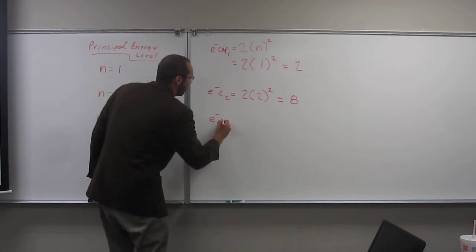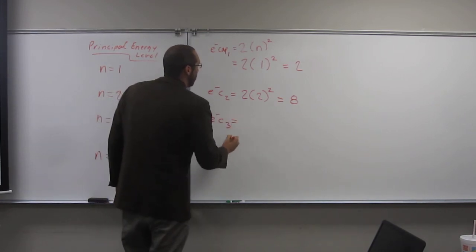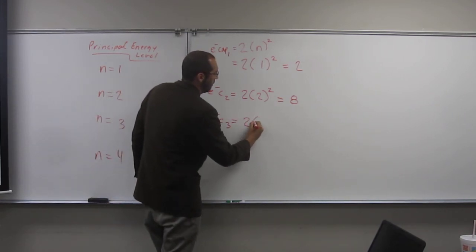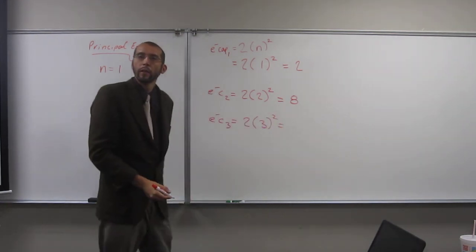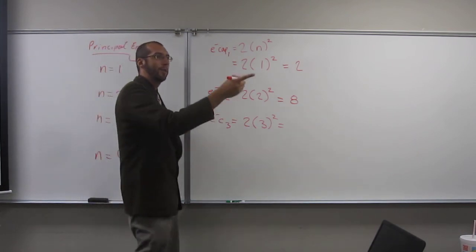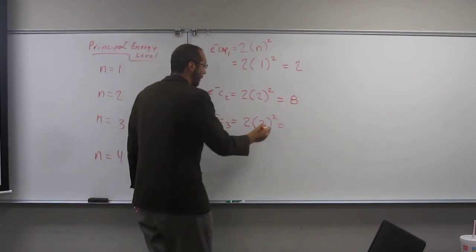What about the electron capacity for 3? So, it's going to be 2, 3 squared, right? So, what is that answer going to be there? 18. 18. Is that what you would expect from looking at that? Very good.